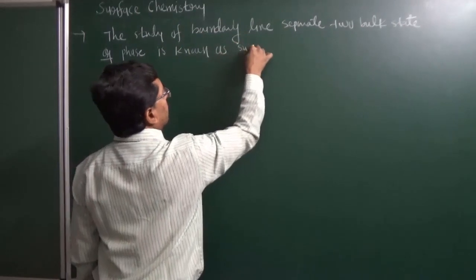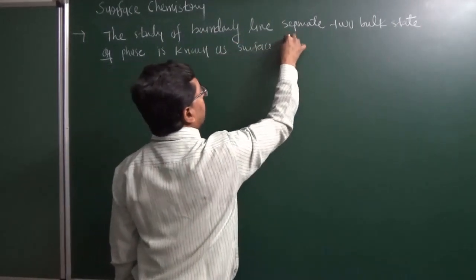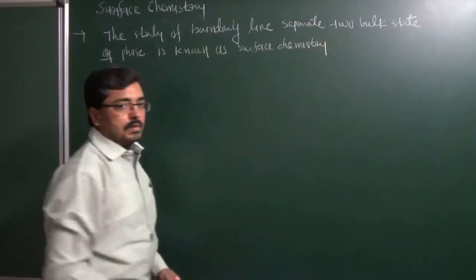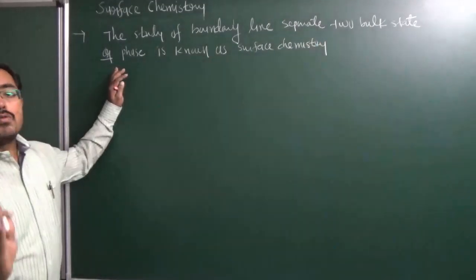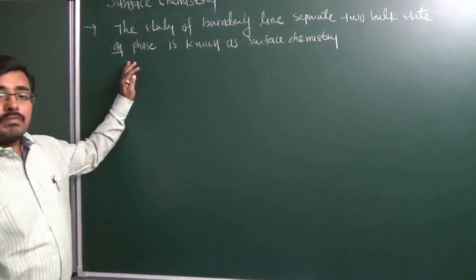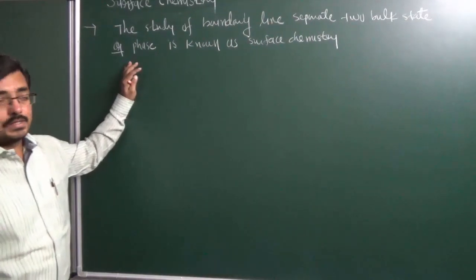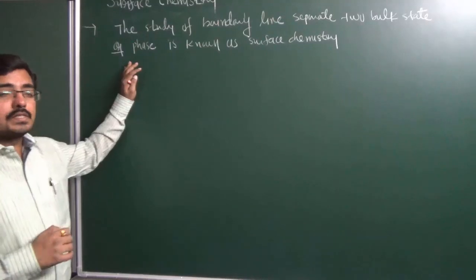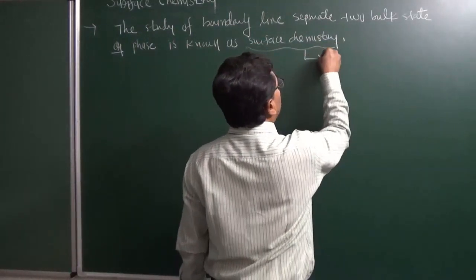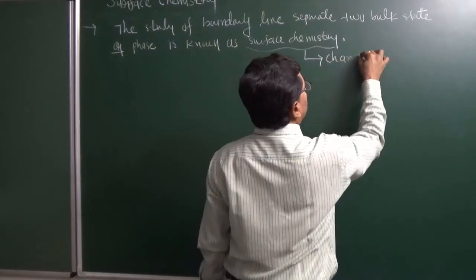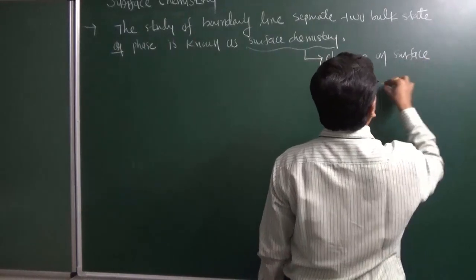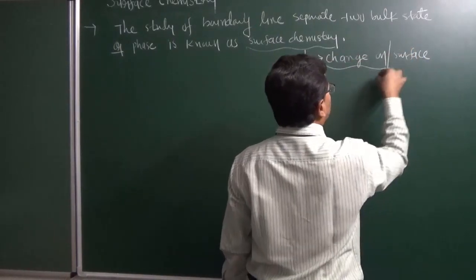So, what is meant by Surface Chemistry? We can define it very simply: Surface Chemistry is nothing but the study of the boundary line separating two bulk states or phases. In Surface Chemistry, we study changes that occur on a surface, and we can also study the nature of a surface.